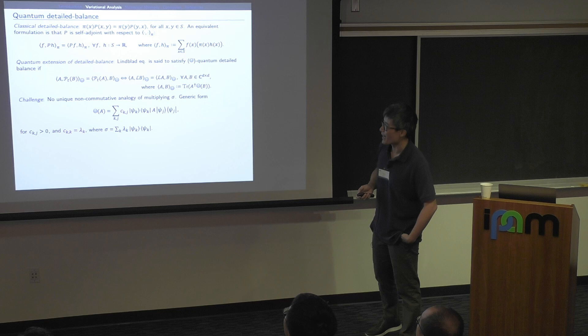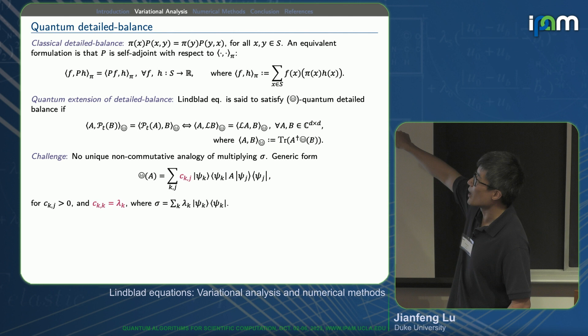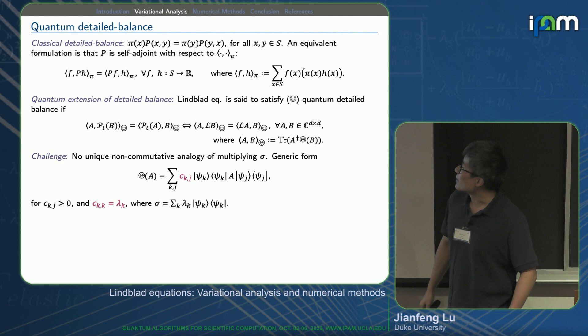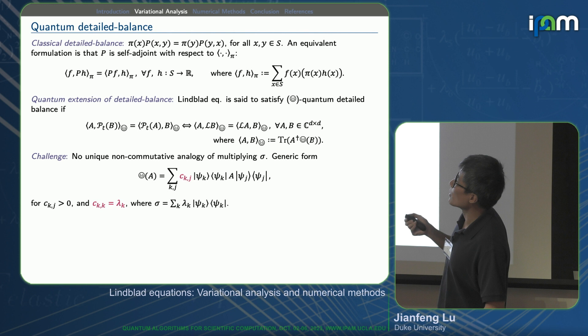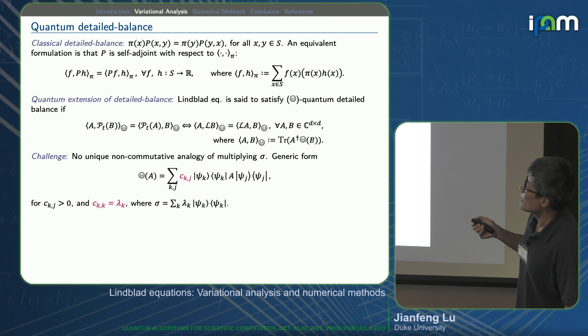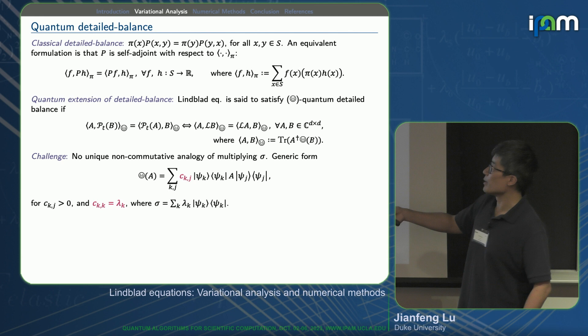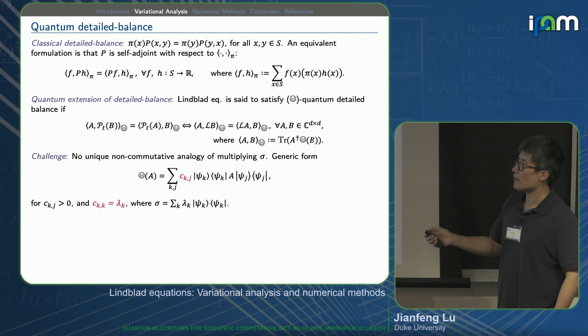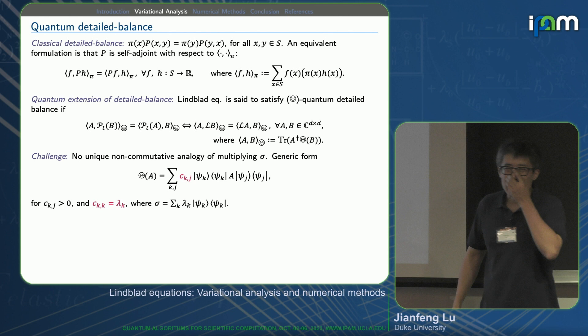To state our theorem, I need to go back to the quantum detailed balance that Anthony already mentioned. Everyone knows the classical detailed balance condition: if you have a transition probability from x to y, it doesn't matter if you go from x to y or from y to x. An equivalent way of thinking about this is via Dirichlet forms: the inner product of two functions sandwiched by the Markov generator, with inner product weighted by the invariant measure pi, is symmetric. This symmetry automatically implies all eigenvalues of the matrix are real, and with a little more work you can show that for this classical Markov chain, all eigenvalues have magnitude at most one, so exponentiating them converges to equilibrium.